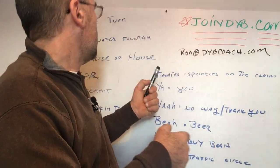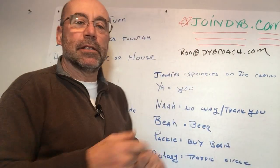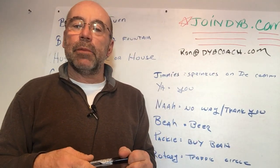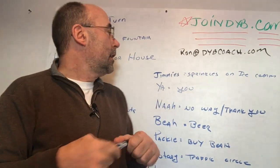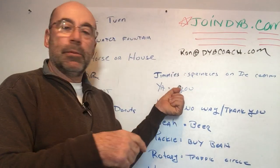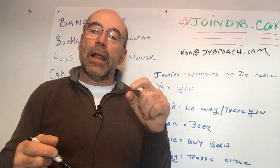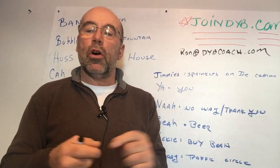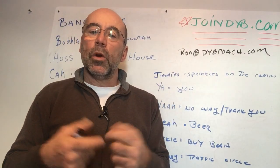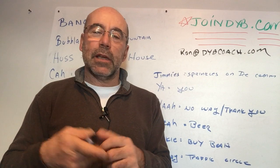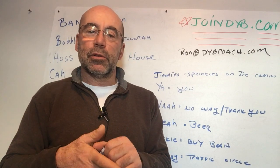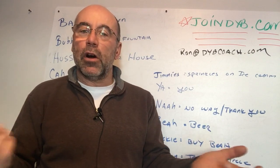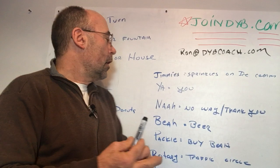Okay, Jimmy's. This is one that is not for everyone. Jimmy's — right here — Jimmy's is the little black and colorful sprinkles you put on top of an ice cream. We call them Jimmy's. Some people call them sprinkles, and they look like ants. We call them Jimmy's.